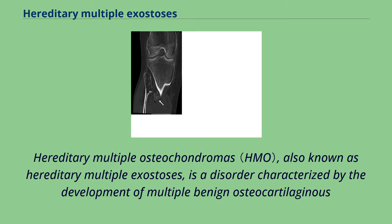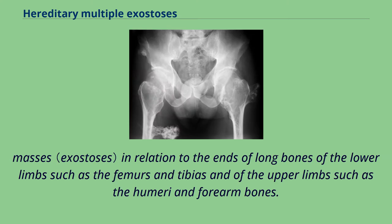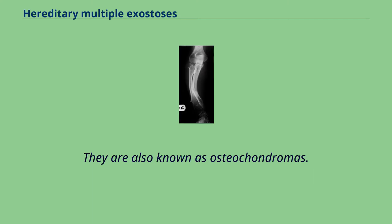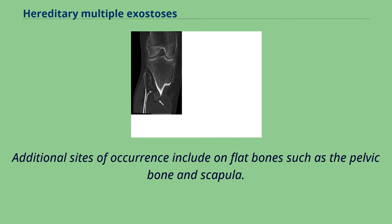Hereditary multiple osteochondromas, also known as hereditary multiple exostosis, is a disorder characterized by the development of multiple benign osteocartilaginous masses in relation to the ends of long bones of the lower limbs such as the femurs and tibias, and of the upper limbs such as the humeri and forearm bones. They are also known as osteochondromas. Additional sites of occurrence include flat bones such as the pelvic bone and scapula.